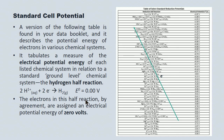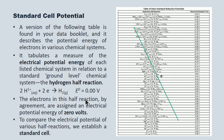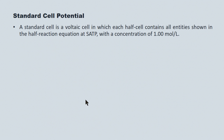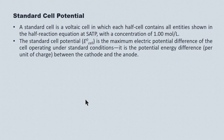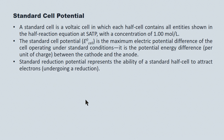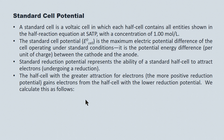The electrons in this half-reaction are by agreement assigned an electrical potential energy of zero volts. To compare the electrical potential of the various half-reactions, we establish a standard cell to do the testing. A standard cell is simply a voltaic cell in which each of the half-reactions contains all entities shown at SATP conditions and with a concentration of one mole per liter. The standard cell potential then becomes the maximum electrical potential difference of the cell operating under standard conditions. It's the potential energy difference between the cathode and the anode, and also a measure of the ability of a standard half-cell to attract electrons and to undergo reduction. The half-cell with the greatest attraction to electrons will gain electrons from the half-cell with the lower reduction potential.